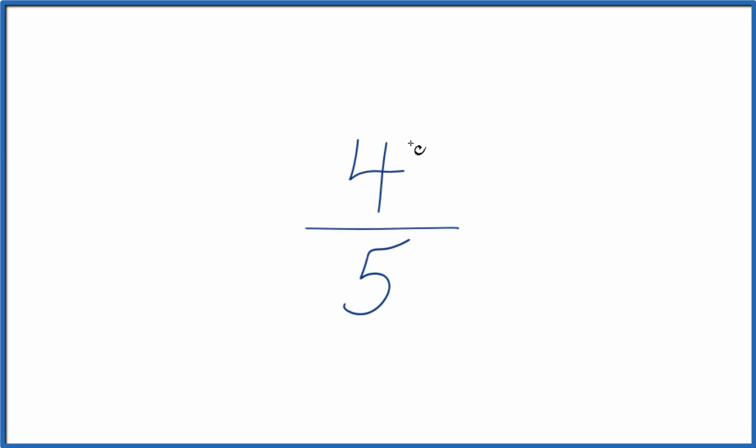Let's find some equivalent ratios for 4 fifths. What we'll do is multiply the numerator and the denominator by the same number. So let's multiply 4 times 2 and 5 times 2.